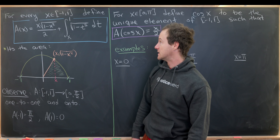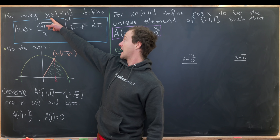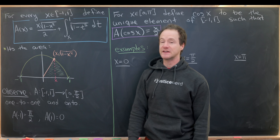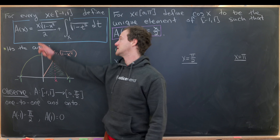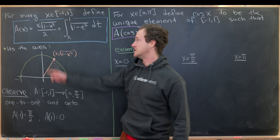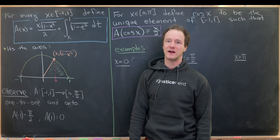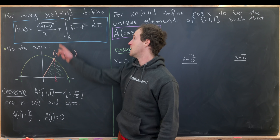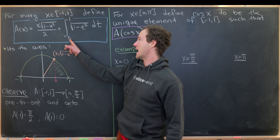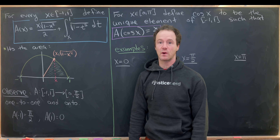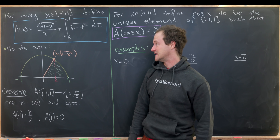So let's see what parts we need. For x on the closed interval negative one to one, we define A evaluated at x to be x times the square root of one minus x squared, over two, plus the integral from x to one of the square root of one minus t squared.